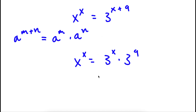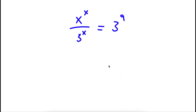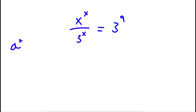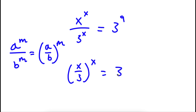Now what I'm going to do is divide both sides by 3 to the power of x. So these two cancel out, and I'm left with x to the power of x over 3 to the power of x is equal to 3 to the power of 9. Now if I have something in the form a to the power of m over b to the power of m, this is the same thing as a over b to the power of m. So x to the power of x over 3 to the power of x, we can rewrite as x over 3 to the power of x.